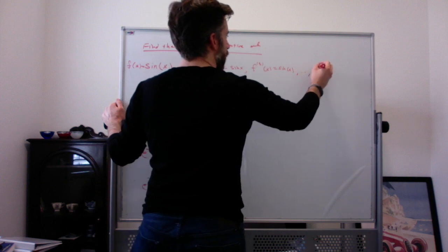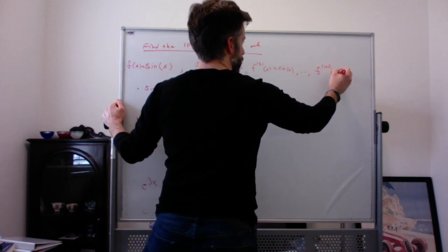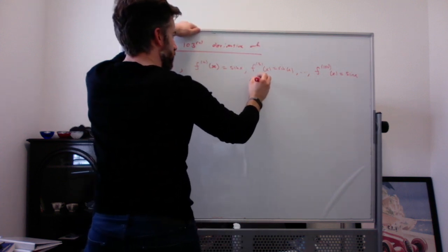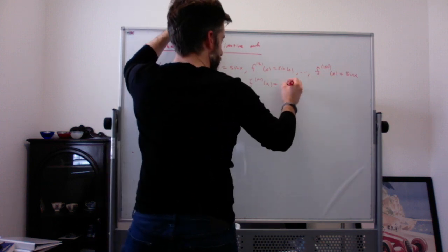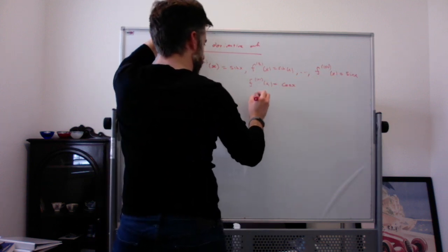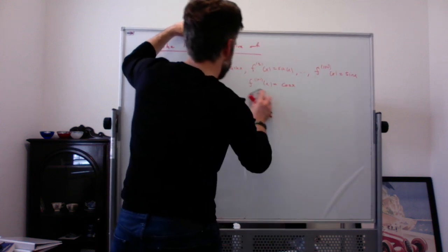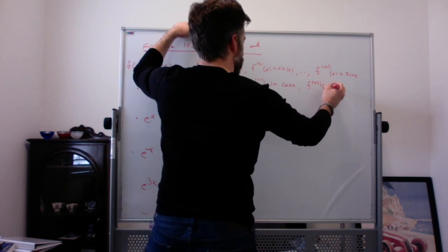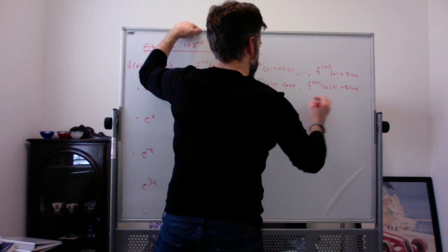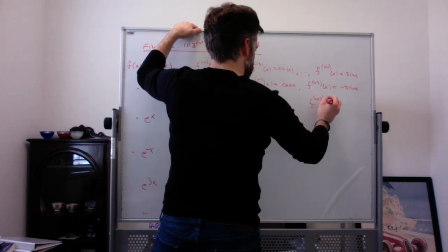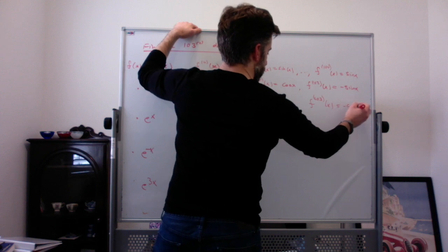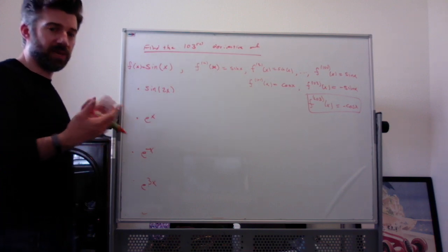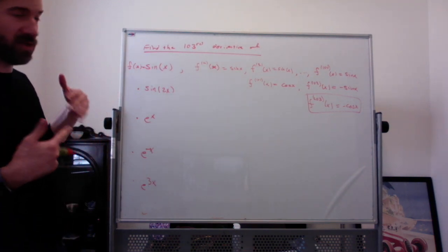We know all the way to the 100th derivative of sine is sine of x, and then we take three more. The 101st derivative: derivative of sine is cosine. The 102nd derivative: derivative of cosine is negative sine. The 103rd derivative: derivative of negative sine is negative cosine. So to find the 103rd derivative, take the largest multiple of 4 — that's 100 — and there are 3 left over, so do 3 derivatives of sine.